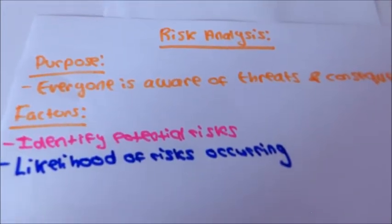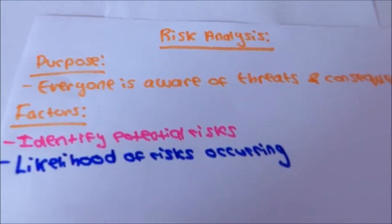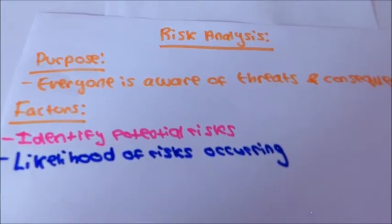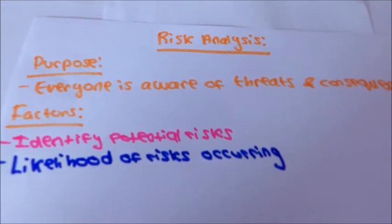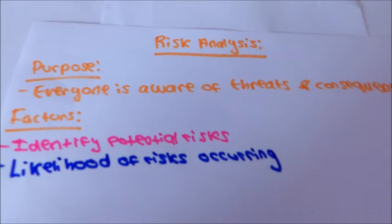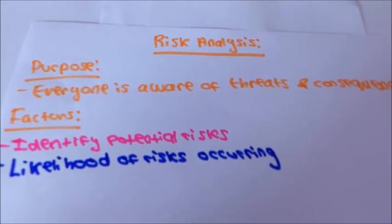The likelihood of the risk occurring should be analysed. Each risk will need to be examined from the point of view of the security and the loss assessed and its likely occurrence. For example, some things such as power cuts are inevitable but explosions are much less likely.